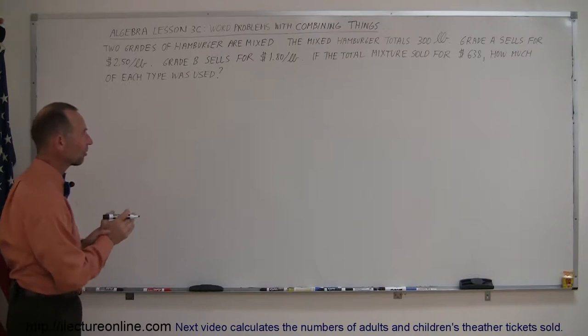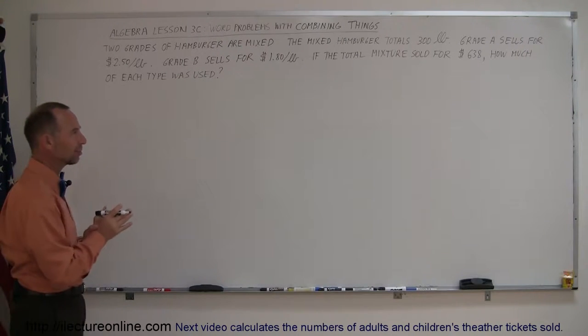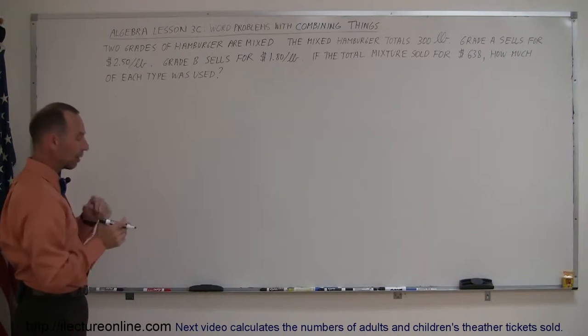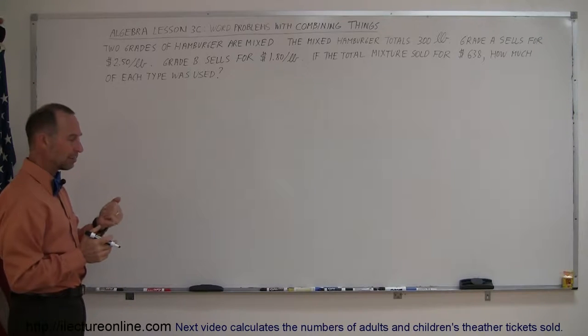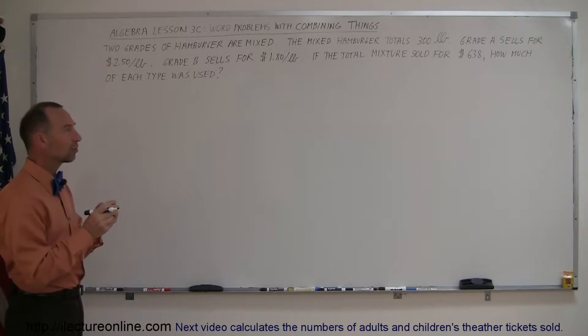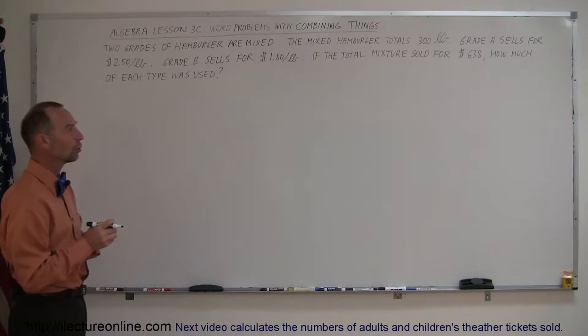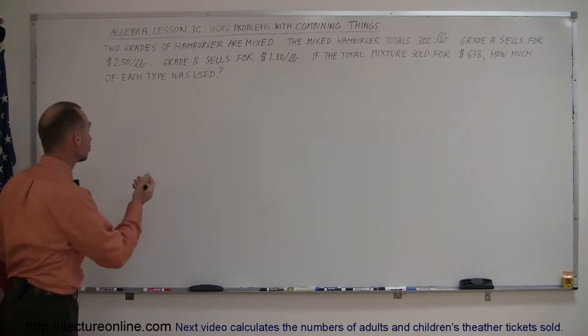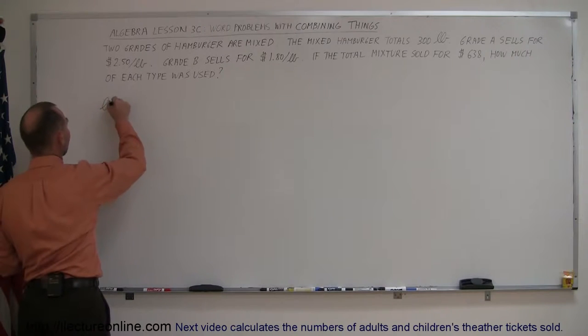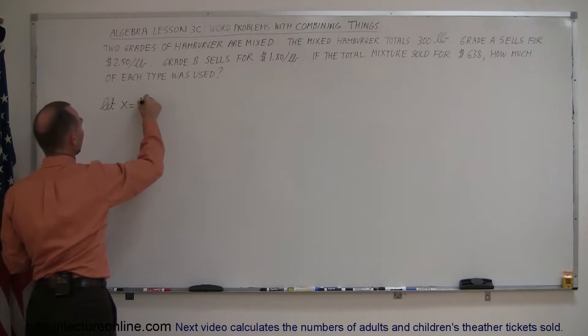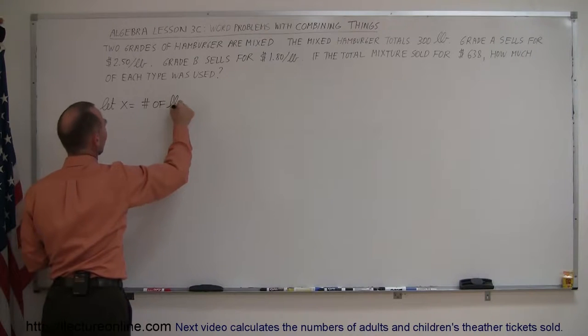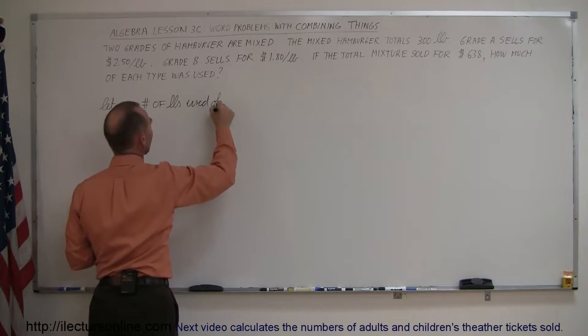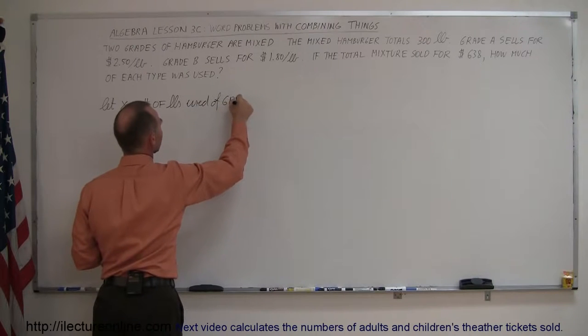This is much like a mixture problem, it's done a little bit differently, so let me show you what the best way to go about it is. I have two types of hamburger, grade A, grade B, and we're trying to find how many pounds of each were used. You're going to let X represent the amount of pounds for one of the two, so let X equal the number of pounds used of grade A.